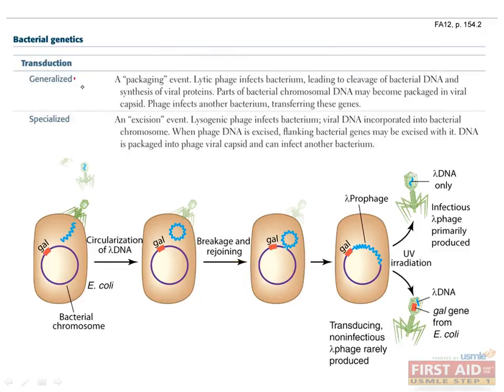In generalized transduction, genetic material is transferred by bacterial viruses or bacteriophages. The lytic phage infects a bacterium, leading to cleavage of bacterial DNA and synthesis of viral proteins. Parts of the bacterial chromosome DNA may then become packaged into viral capsids, and the phage can transfer those genes when infecting other bacteria.